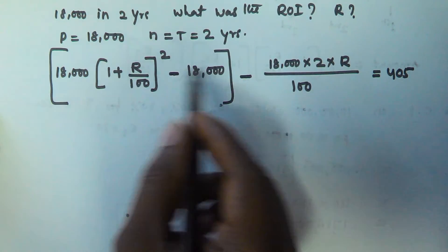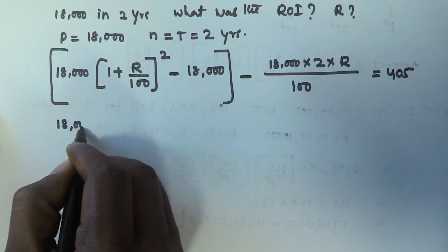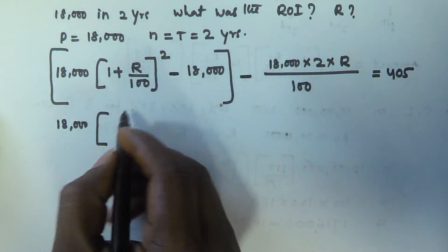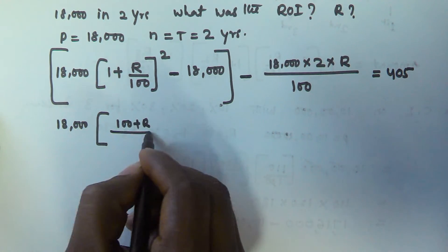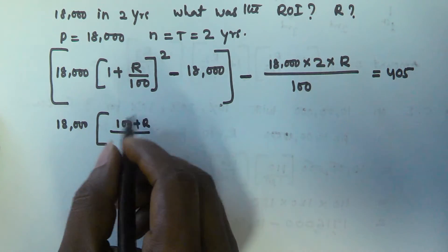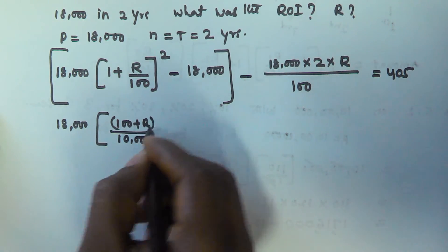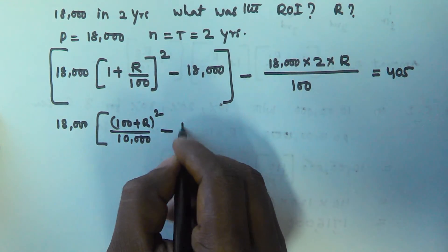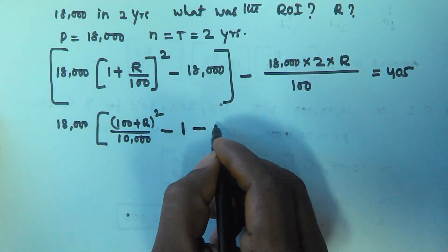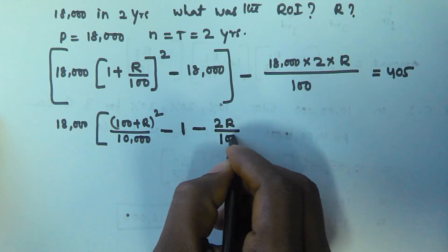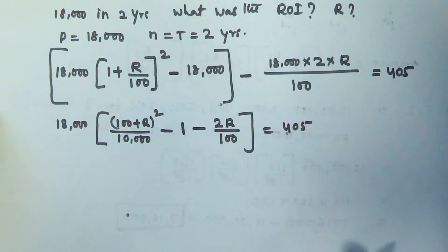Since 18,000 appears throughout, we take 18,000 as common. So we get 18,000 into [(100 + R)²/10,000 − 1 − 2R/100] equals 405.